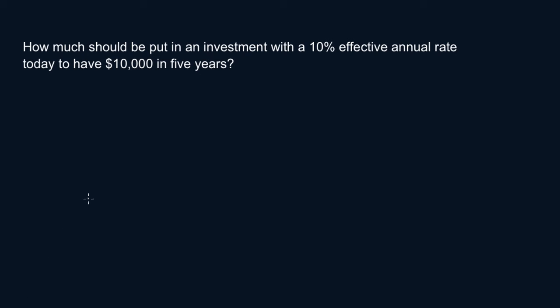So F is the known value. So F is $10,000. I, that's your interest rate, it's 10%. This is fairly simple, but at least I kind of give you the basics, which is important.